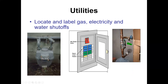Know where your utilities are located. Most homes now have circuit breakers — know where the main breaker handle is, because it shuts off all branch circuits. This is your natural gas supply, and this is your water supply.